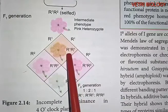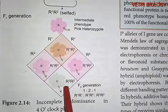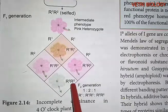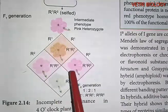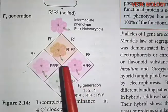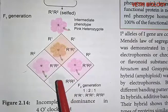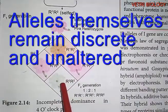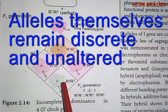The genotypic ratio is 1 R1R1 : 2 R1R2 : 1 R2R2. Here, there is no blending of genes, because if blending occurred, we would not recover red and white color flowers in the F2 generation. The alleles themselves remain discrete and unaltered, according to Mendel's law of segregation.